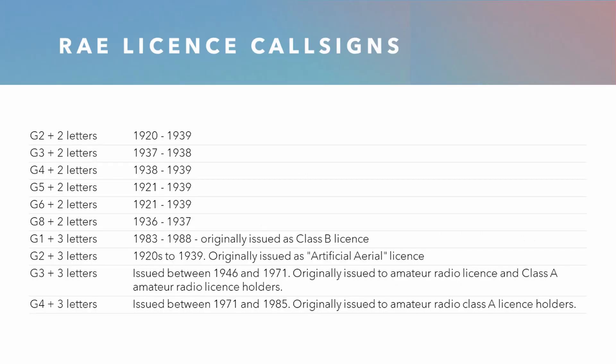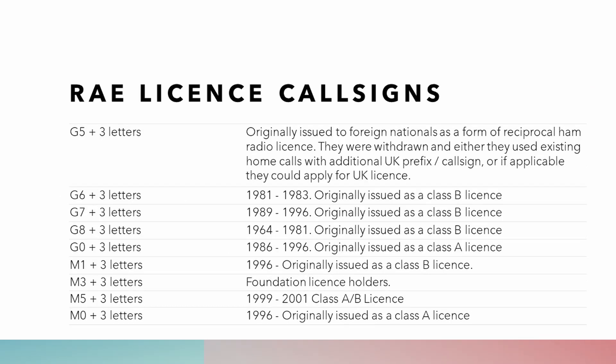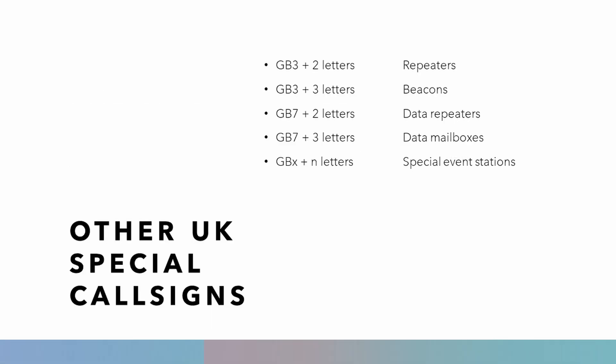Going back in time, you can see how the RAE licence call signs have evolved. Over the years, they have gone from G2 with two letters, up through G4, G5, G6, G8, G1 and G0. By looking at a call sign, you can typically work out when it was issued and what class it was. Additionally, when you hear G call signs from the UK, they could be special call signs for repeaters, beacons, data repeaters, data mailboxes, and even special event stations.